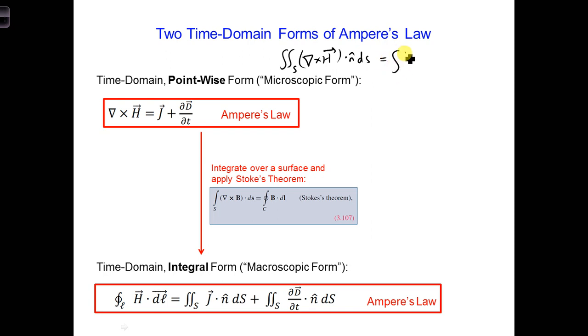And on the right side, we get similar, we just fill in J dot n-hat dS, plus dD dt dot n-hat dS. All right, so we've applied this to the surface. n-hat is a unit vector pointing outward from the surface.